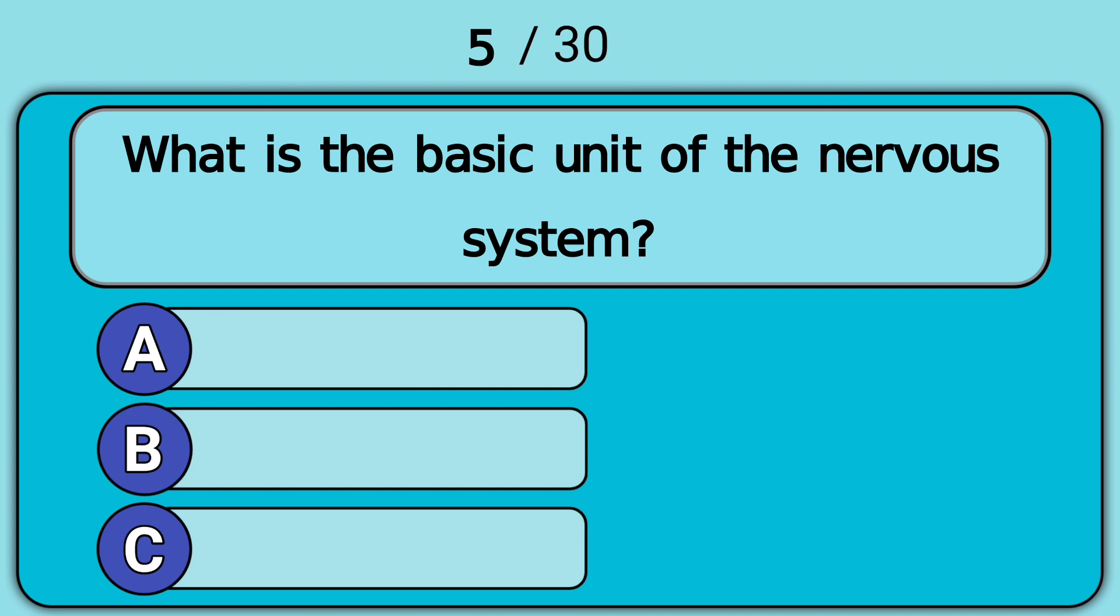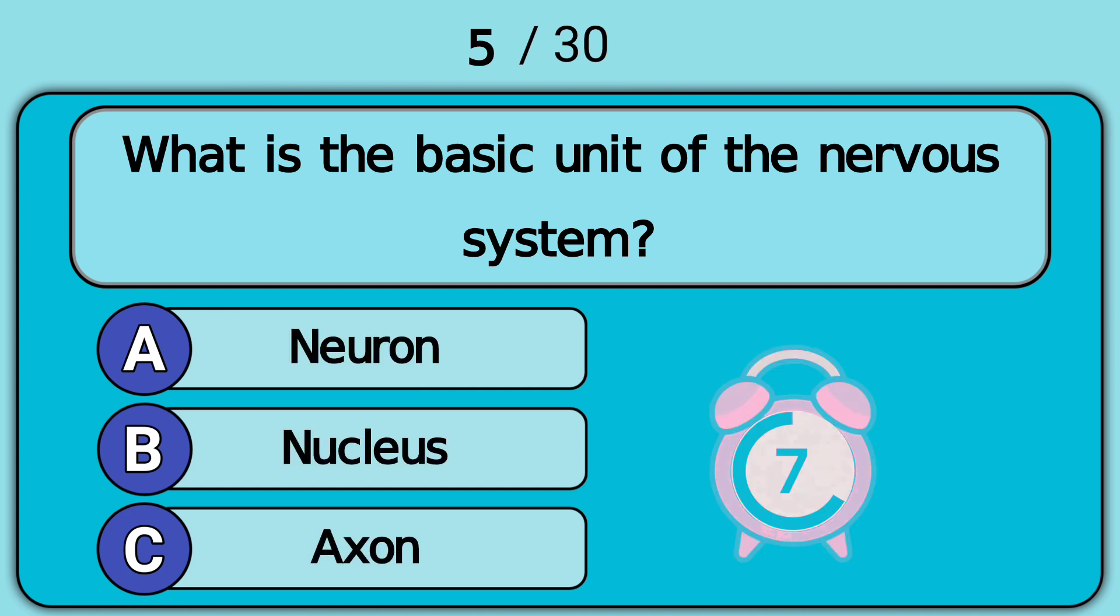What is the basic unit of the nervous system? Answer A. Neuron.